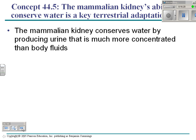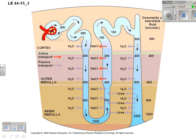In mammals, the kidney produces concentrated urine so that water is conserved. This is another view showing solute concentrations in the kidney as water is taken out.